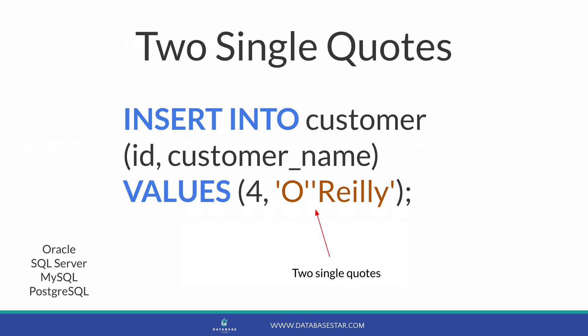The simplest method to escape single quotes in SQL is to use two single quotes. When you want to use a single quote inside your string, add another single quote right after it. For example, the insert statement here will insert the value of O'Reilly into the table. This insert statement has two single quotes inside the word O'Reilly. When we select from the table, we only see one single quote, because the two single quotes are processed as one quote being used to escape the other. This technique works in Oracle, SQL Server, MySQL, and PostgreSQL.